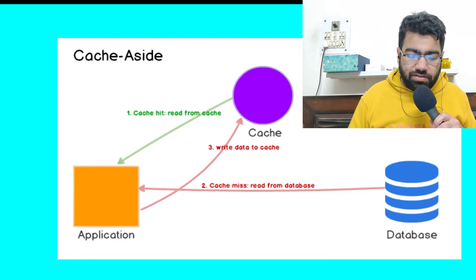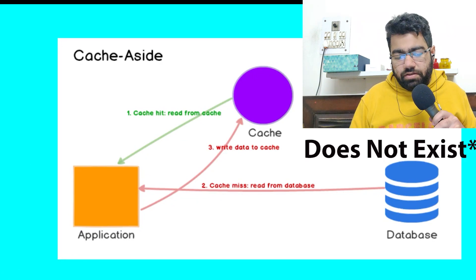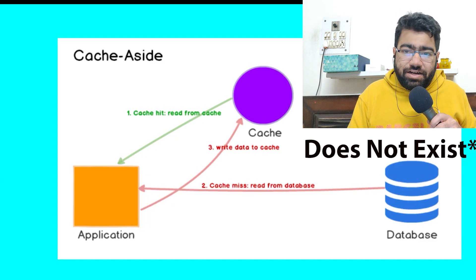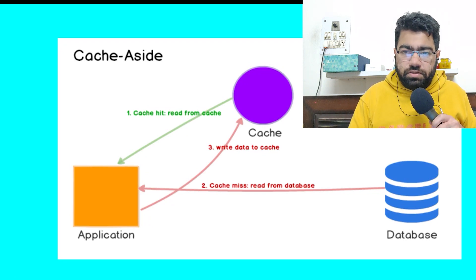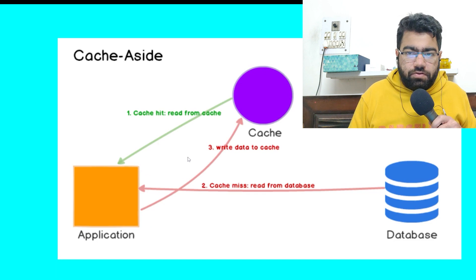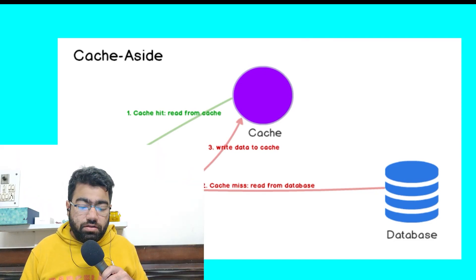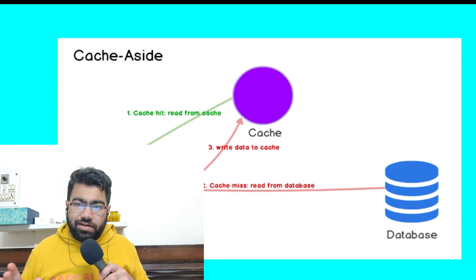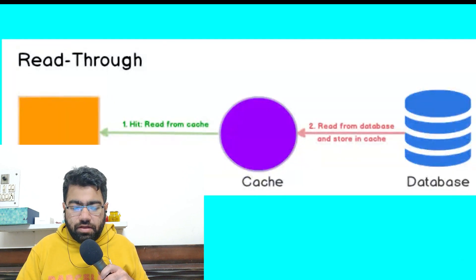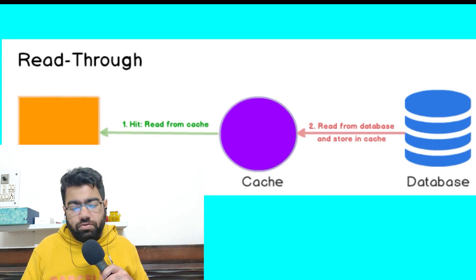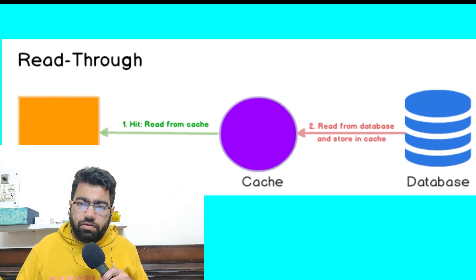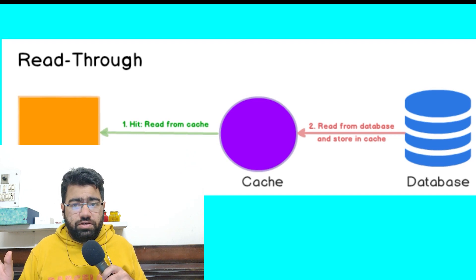In cache-aside, the application reads from the cache. If the data does not exist, it makes a call to the database, reads it, and then writes it back to the cache. This is the most common type and easy to implement when building your first system. The application itself is responsible for writing to the cache after a database read. If we remove that responsibility from the application, we get the second type: read-through cache. In read-through, the client just reads from the cache, and the cache itself reads from the database and stores the data if it's not already there.